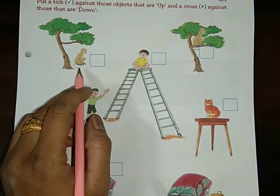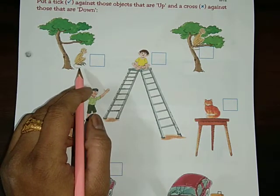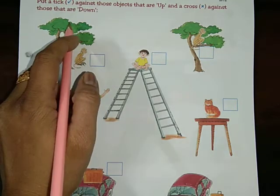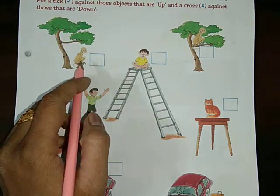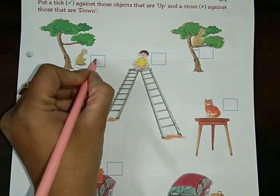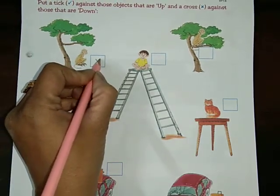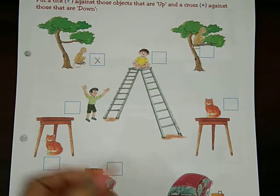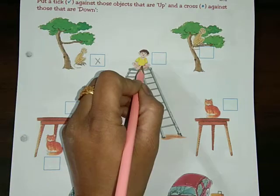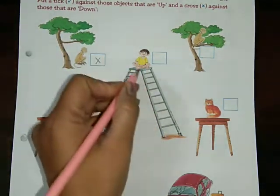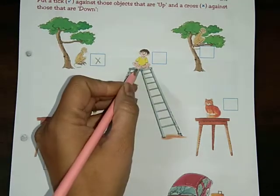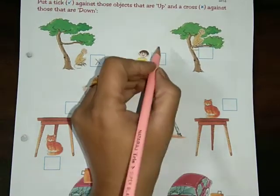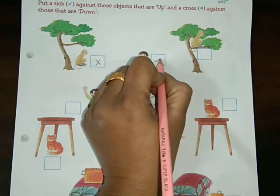Now we are going to look at up and down. Down — that's right, so we will cross it, because it is down. Now this boy — where is he sitting? Up. Yes, he is sitting up, upside.